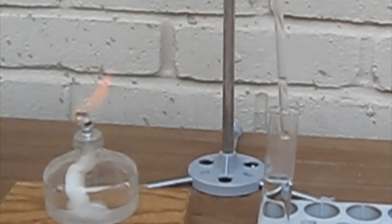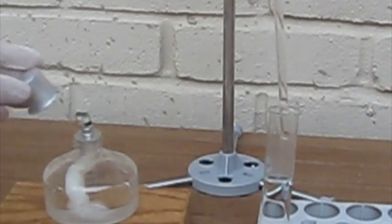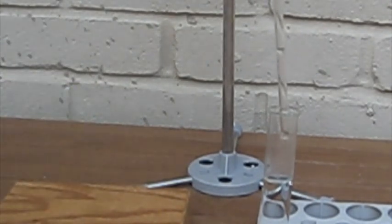You can also see there was a white vapor, which is hydrogen chloride vapors mixed with water, to form hydrochloric acid vapors.